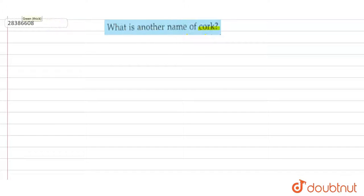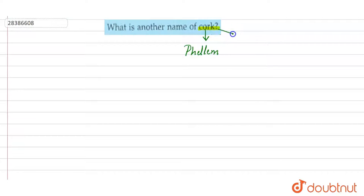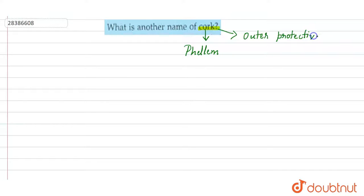This is your phellem. And cork is your outer, protective tissue.